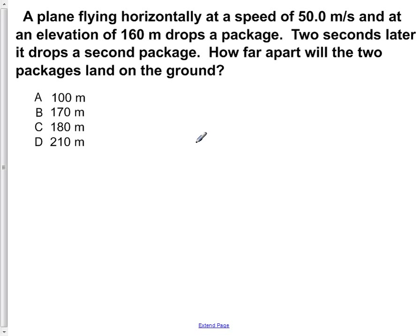A plane flying horizontally at a speed of 50 meters per second and at an elevation of 160 meters drops a package. Two seconds later, it drops a second package. How far apart will the two packages land on the ground?